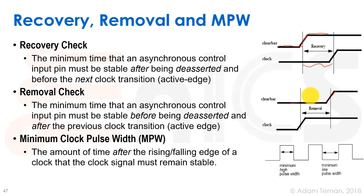The minimum pulse width (MPW) check is defined inside our lib files — there's an MPW table. It specifies the amount of time after the rising or falling edge of a clock that the clock signal must remain stable. It's essentially describing how long the clock pulse has to be; if it gets ruined by transitions, we'll have to buffer or fix that in some other way.